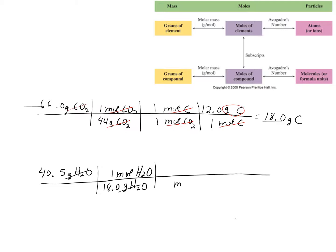Now I have moles of H2O on top, so moles of H2O goes on the bottom, and I apply the subscript conversion factor. For hydrogen, the subscript is two — so two moles of hydrogen in one mole of the compound. Units cancel, and with moles of hydrogen on top, moles of hydrogen goes on the bottom. Converting to grams: 1.0 grams of hydrogen per mole — though more sig figs would be better. The answer comes out to 4.5 grams of hydrogen.